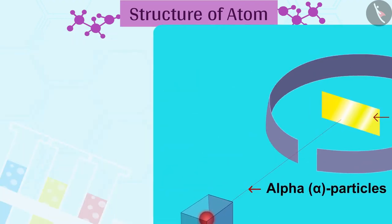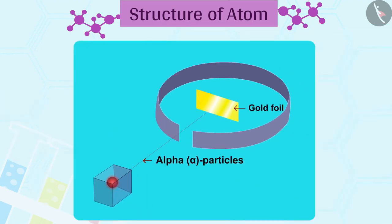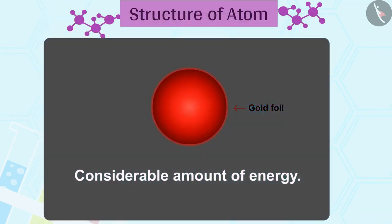2. Alpha particles are doubly charged helium ions and they are positively charged. And since they have a mass of 4U, the fast-moving alpha particles have a considerable amount of energy.